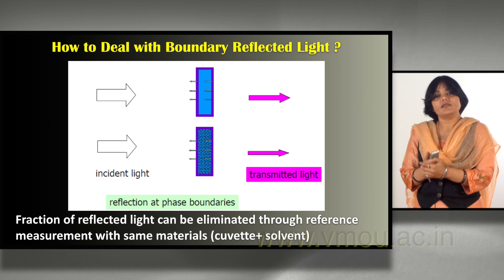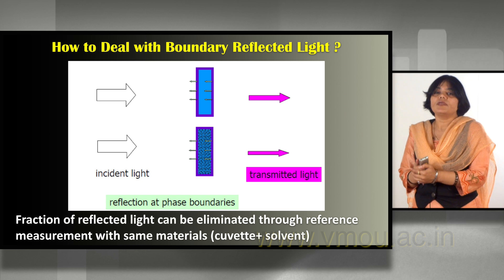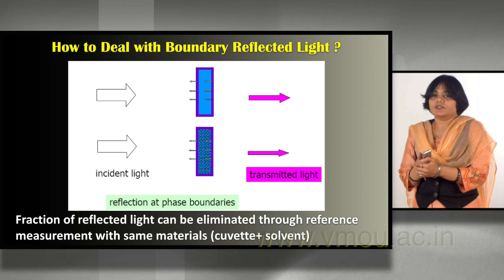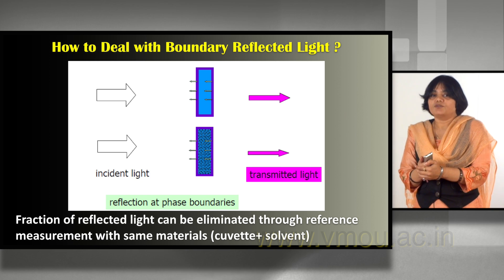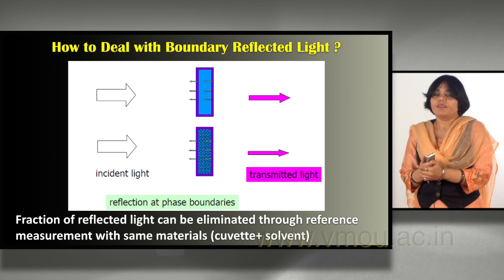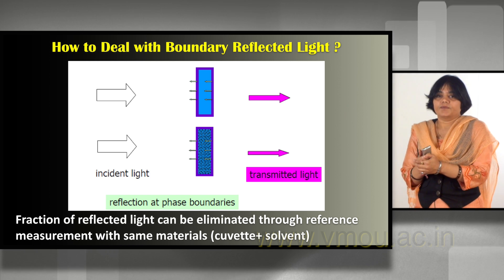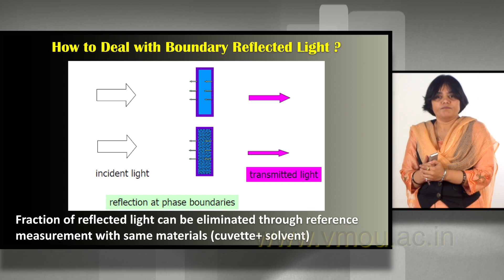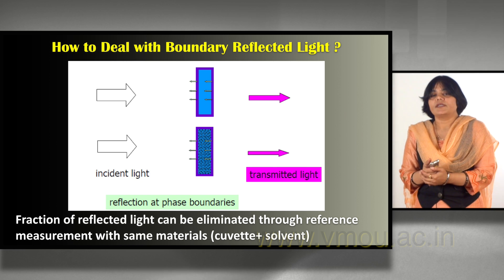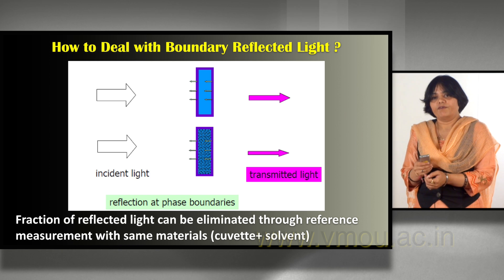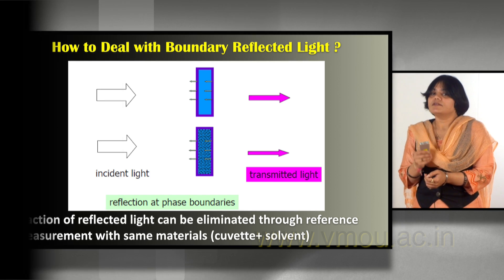To calculate the accurate portion of transmitted light, we first place a simple cuvette with solvent, then under the same conditions place a cuvette with the required solution in the same solvent. We then subtract the absorbance and reflectance contribution of the cuvette and medium, and we can directly obtain the transmitted light portion from the required sample.